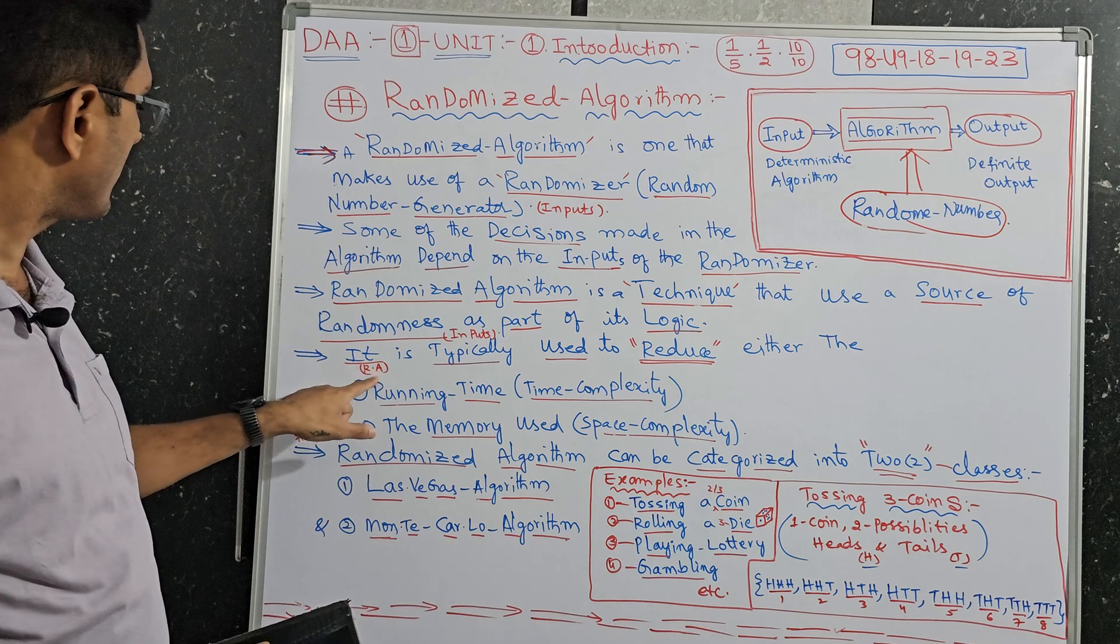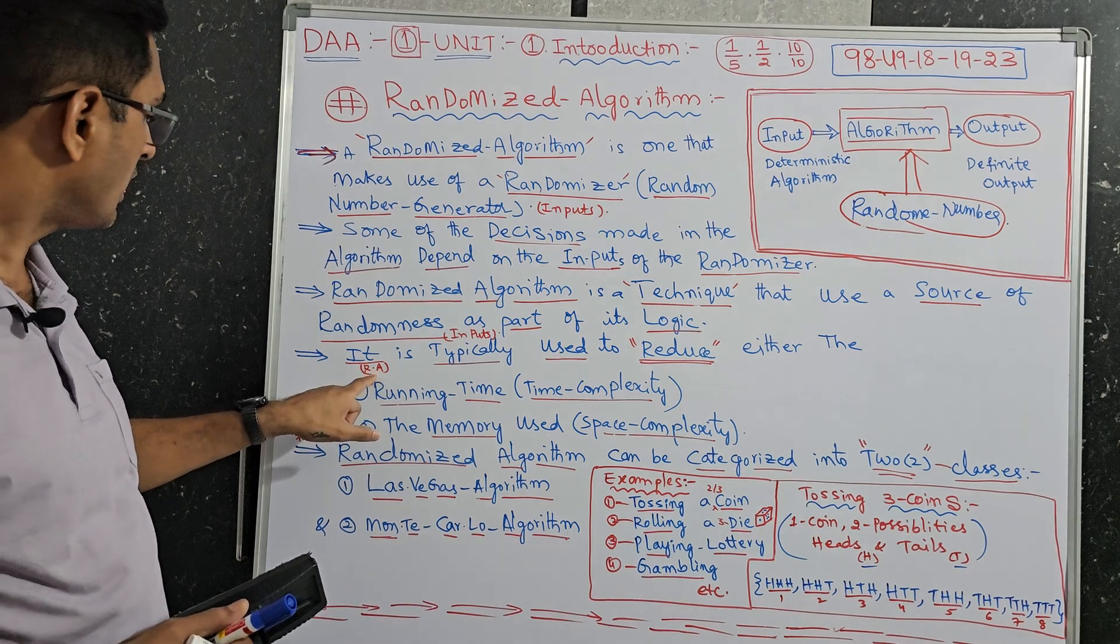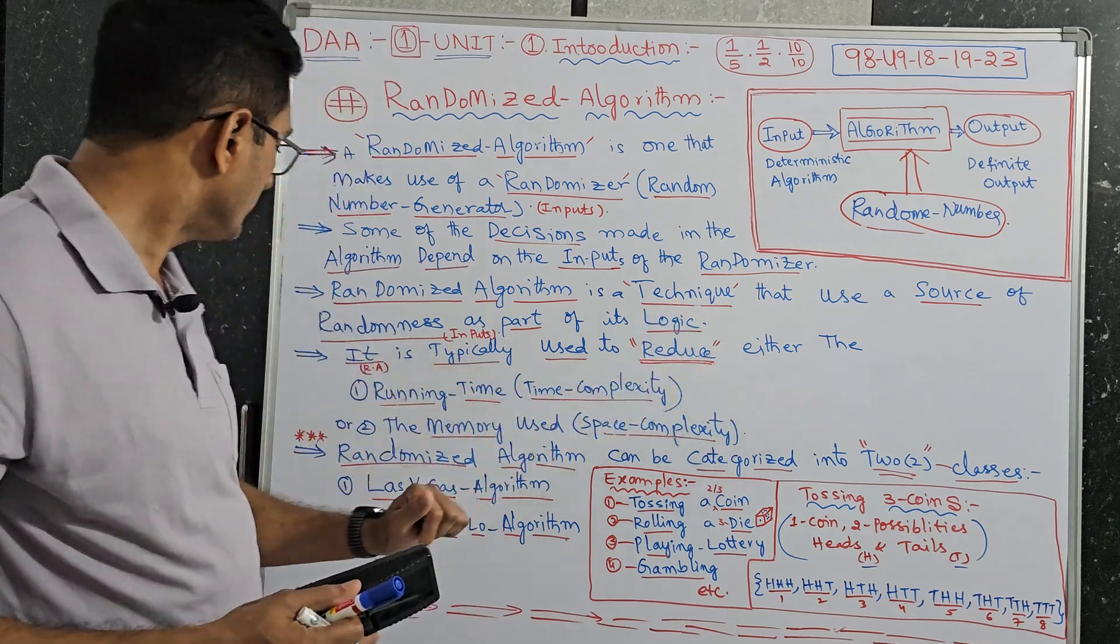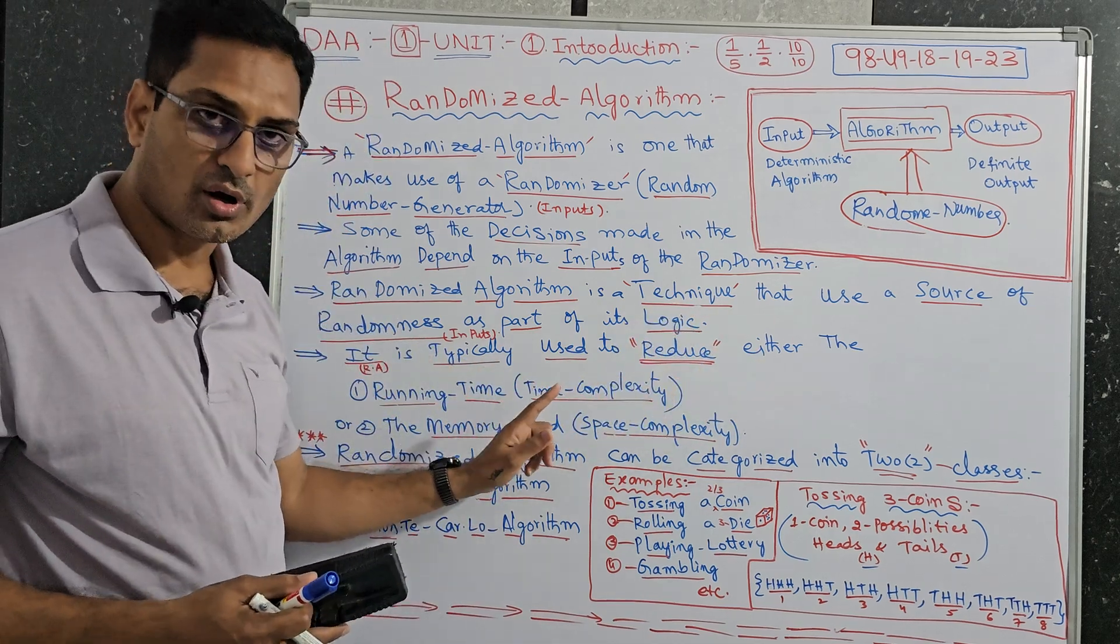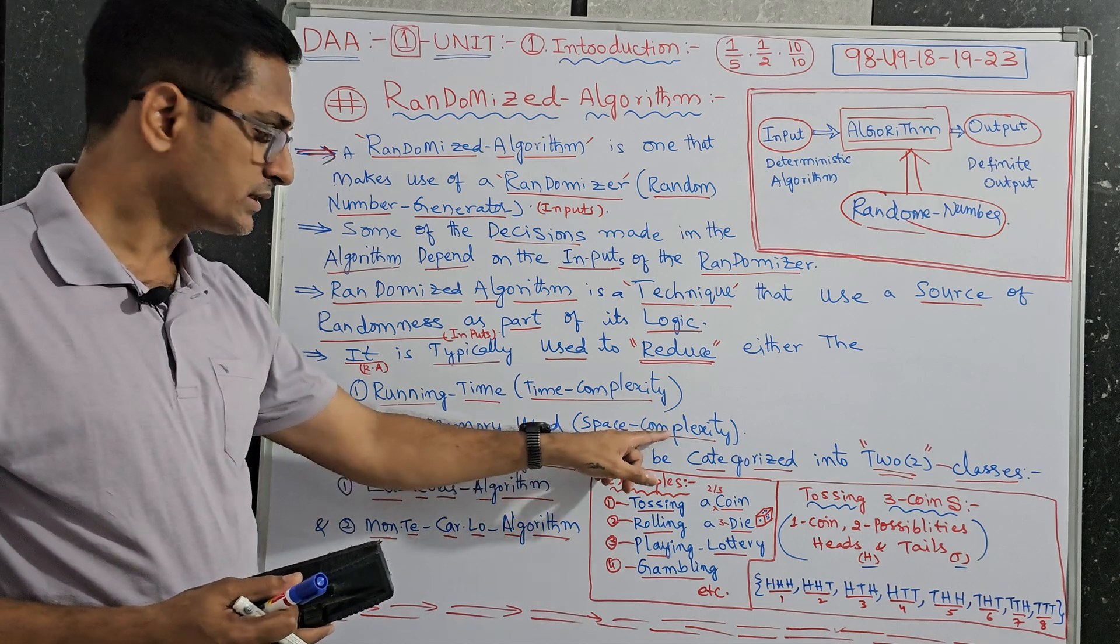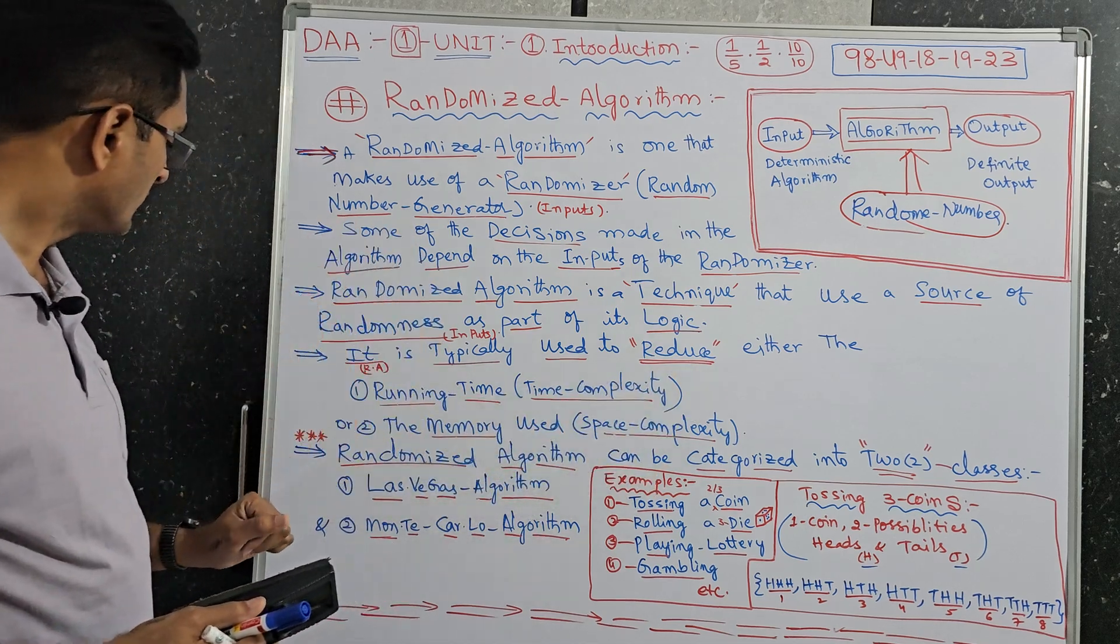It should execute fast. Then we will get the softwares done very fast. Time should run fast and memory should be occupied less. With this algorithm we can achieve this too. It will reduce, it means randomized algorithm.